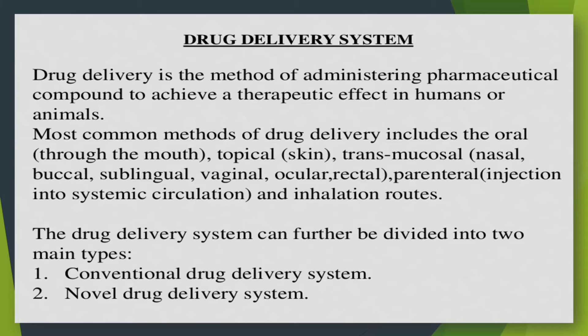The most common methods of drug delivery include oral (through the mouth), topical (skin), transmucosal — nasal, buccal, sublingual, vaginal, ocular, rectal — parenteral (injection into systemic circulation), and inhalation routes. The drug delivery system can further be divided into two main types: conventional drug delivery system and novel drug delivery system.